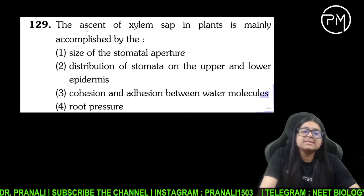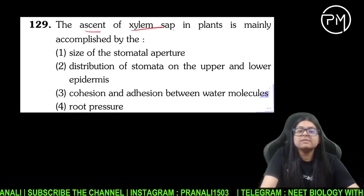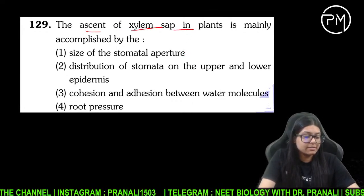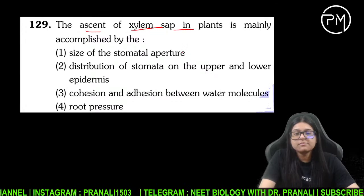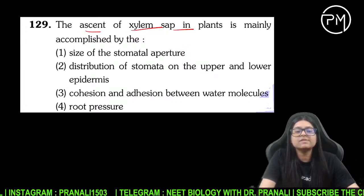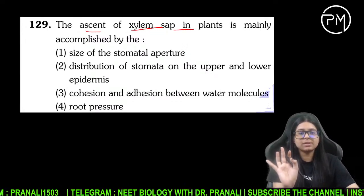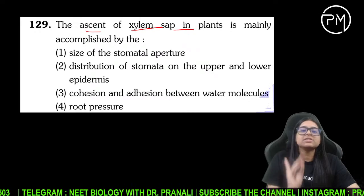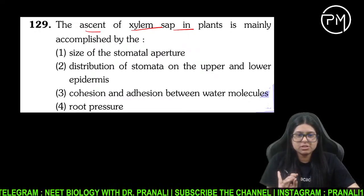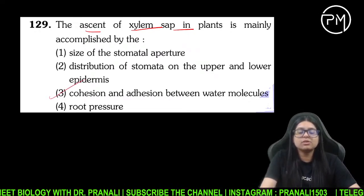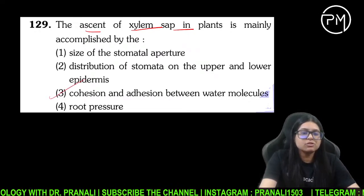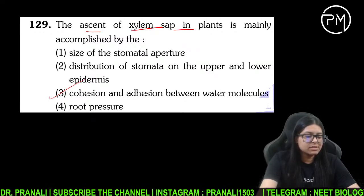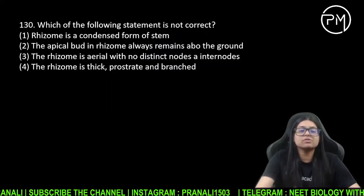The ascent of xylem sap in plants is mainly accomplished by — ascent of sap kisse hota hai? Teen cheezon se hota hai: cohesion, adhesion, surface tension. Dixon and Jolly ki theory thi na — toh cohesion and adhesion ho jayega.